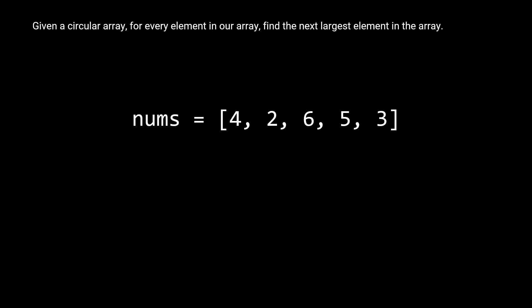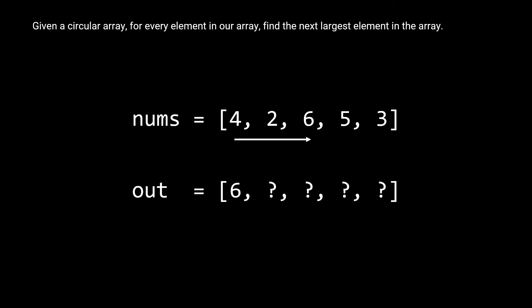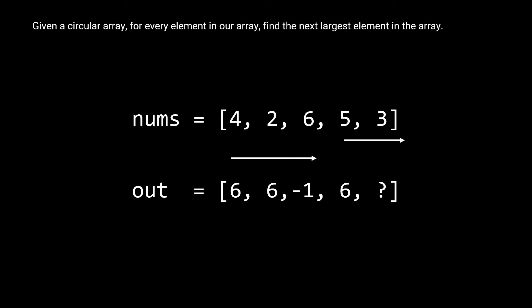Let's take a look at an example. We're given a nums array and will return an output array of the same dimensions. For the first element, four, the next largest is six. For the two, the next largest is also six. For the six, there is no next largest element even when we wrap back around, so we fill it with negative one. For the five, we look right and see three, then wrap around to four, two, and six — the next largest is six. For the three, we wrap around to find the next largest is four. So we return the array: six, six, negative one, six, four.